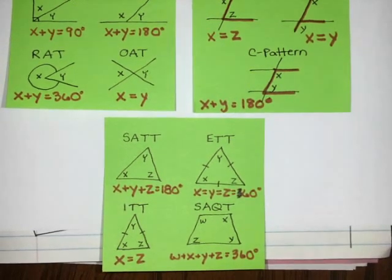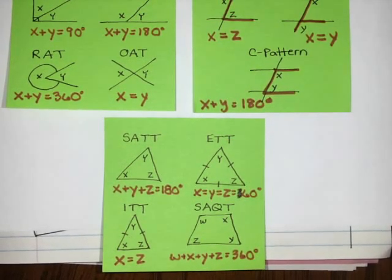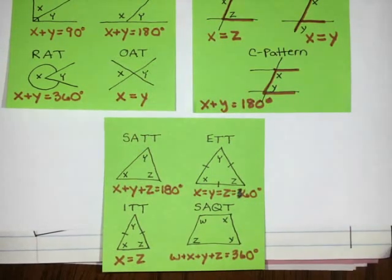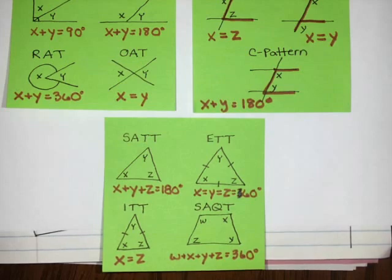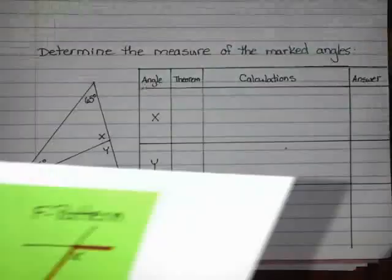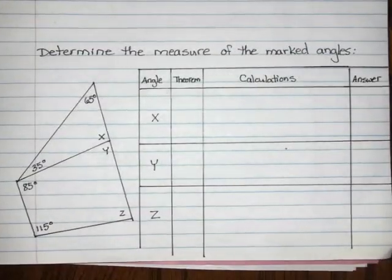I like to keep this reference sheet to look at while doing questions. Because of the current shutdown, we've reduced our expectations — you do not have to memorize all of these theorems, but you need to be at least familiar with them so that you know what to use and when. I have a diagram here and the question says: determine the measure of the marked angle.